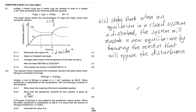Now 6.1.2 asks us to state Le Chatelier's Principle. It states that when an equilibrium in a closed system is disturbed, the system will reinstate a new equilibrium by favouring the reaction that will oppose the disturbance.